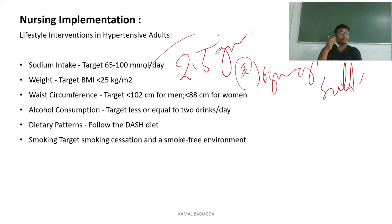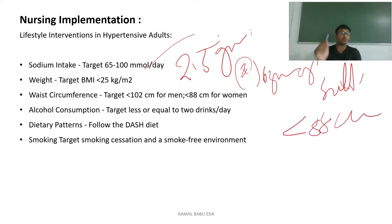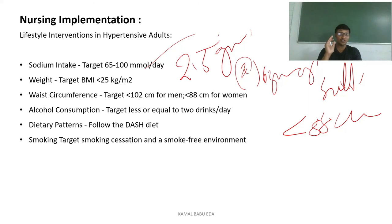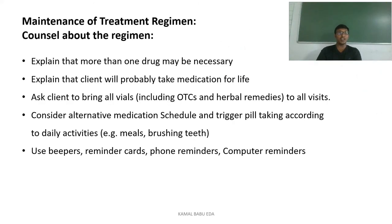For weight management, the target BMI is less than 25 kg/m² and waist circumference should be less than 102 cm for men and less than 88 cm for women. For alcohol consumption, target less than or equal to 2 drinks per day. Follow the DASH diet — a high-potassium dietary pattern. For smoking cessation, patients who smoke should stop and stay in a smoke-free environment, as nicotine raises blood pressure and leads to hypertension.